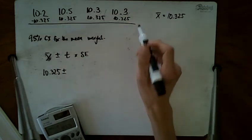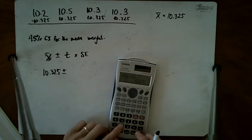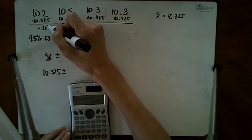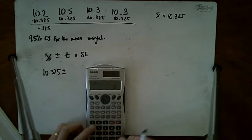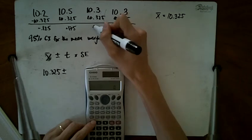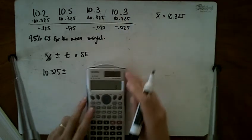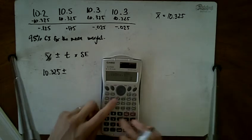The resulting numbers are -0.125, -0.025, and -0.025. I need to square each of these: 0.175 squared, 0.025 squared, 0.125 squared.